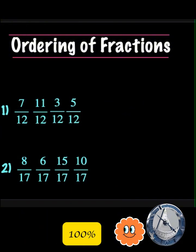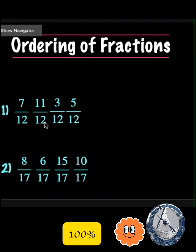Another way to order fractions is to look at the denominators. If two or more fractions have the same denominator, then the fraction with the largest numerator has the largest value.